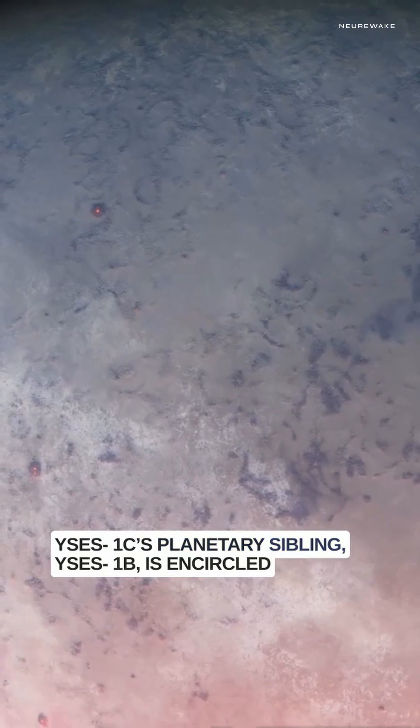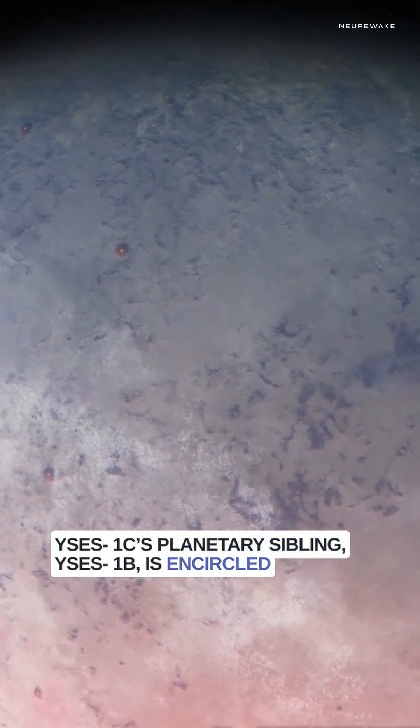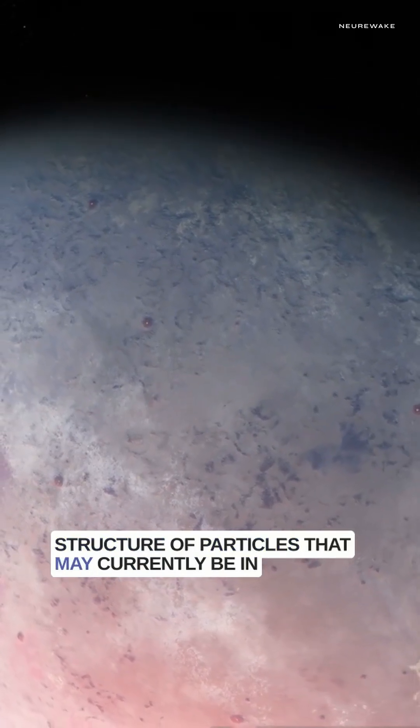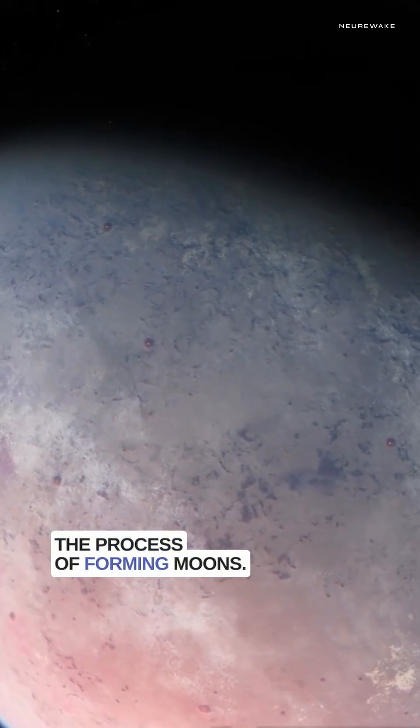YCS1C's planetary sibling, YCS1B, is encircled by a circumplanetary dust disk, a swirling structure of particles that may currently be in the process of forming moons.